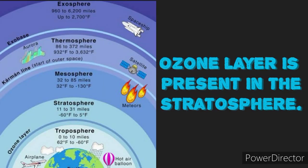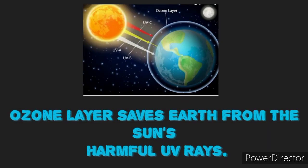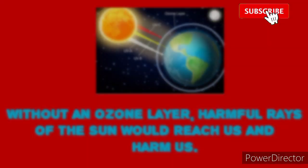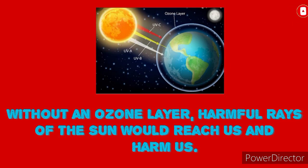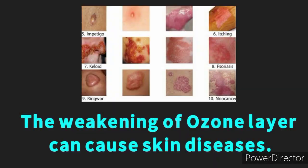Ozone layer is present in the stratosphere. Ozone layer saves Earth from the sun's harmful UV rays. Without an ozone layer, harmful rays of the sun would reach us and harm us. Weakening of the ozone layer can cause skin disease.